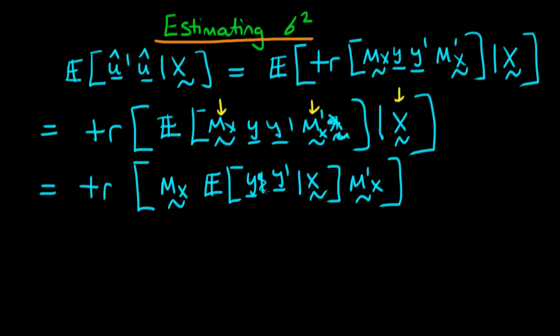And we know that the expectation of y times y primed is just going to be equal to, if I write it down, the expectation of y times y primed given x is just going to be equal to the identity matrix times sigma squared.